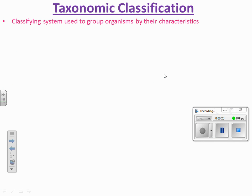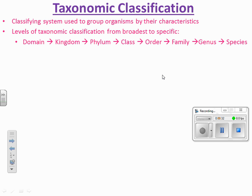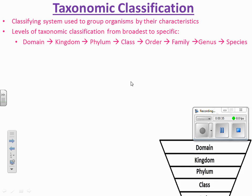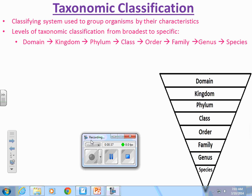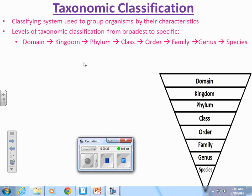Taxonomic classification is a classifying system used to group organisms by their characteristics or features. There are levels of taxonomic classification. The broadest is domain, and then we have kingdom, phylum, class, order, family, genus, and species. This diagram will help you remember that domain is the broadest and species is the most specific.